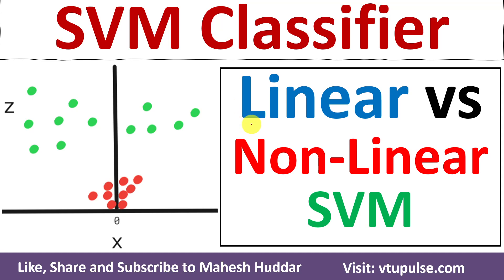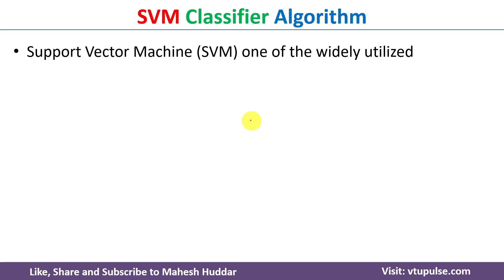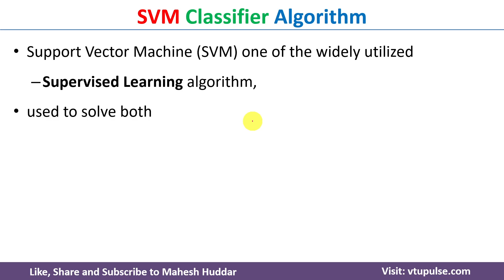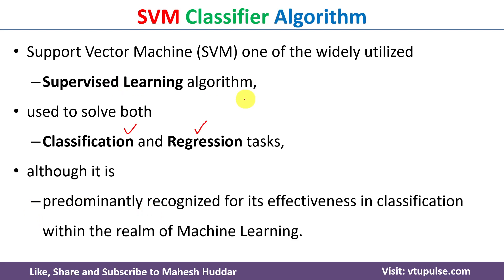Welcome back. In this video I will discuss linear and non-linear SVM with the help of simple examples. First we will understand what is an SVM classifier. SVM stands for Support Vector Machine. It is one of the widely utilized supervised machine learning algorithms used to solve both classification as well as regression tasks. Classification means the given target has a discrete number of possibilities like yes or no; regression means the target contains continuous values.